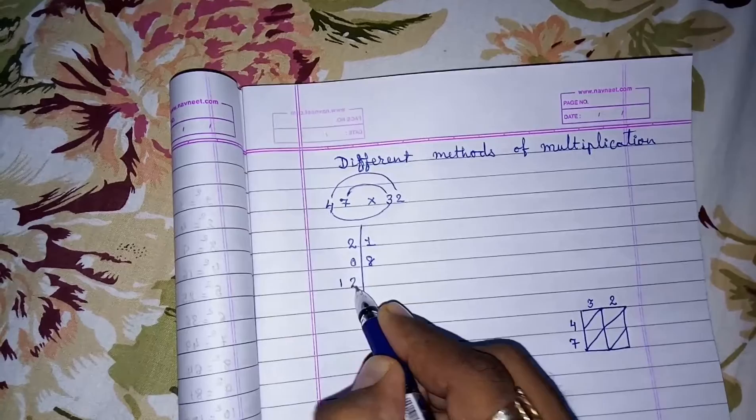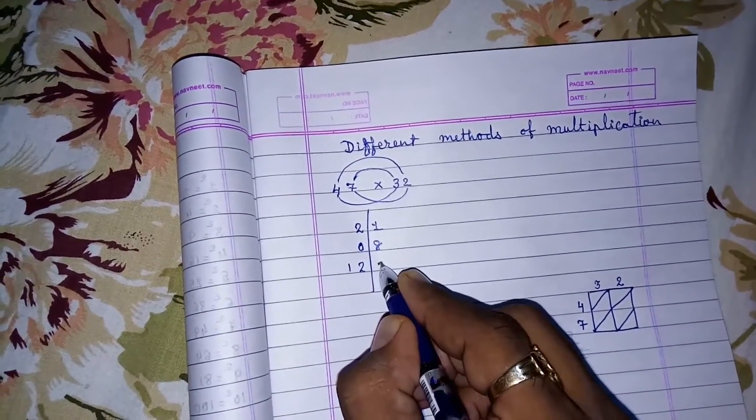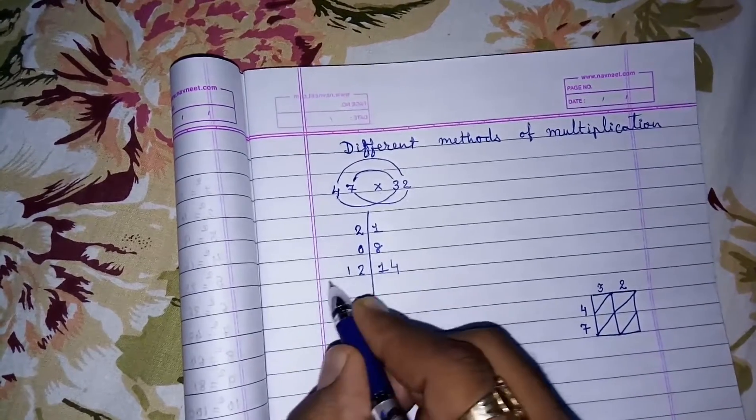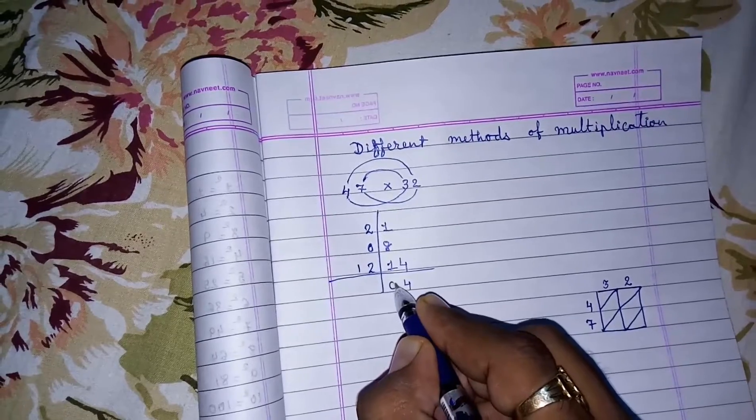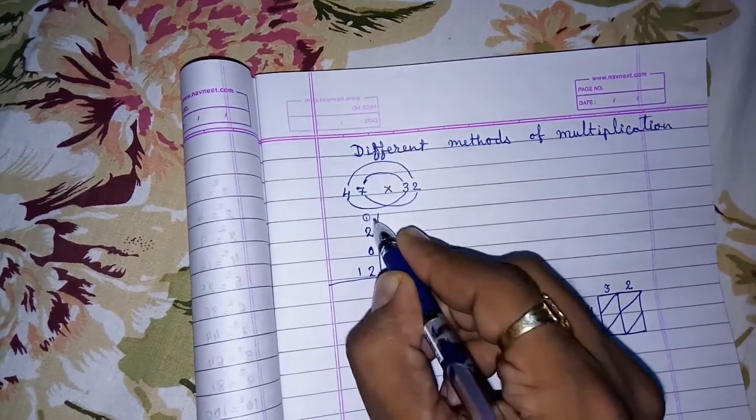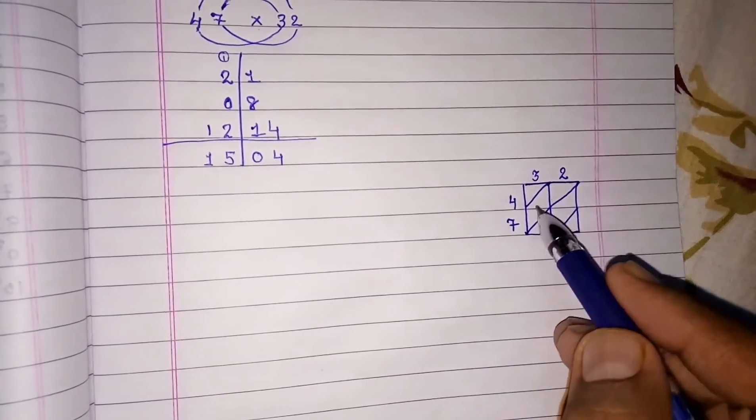And the right hand side numbers: 7 into 2, 14 on the right hand side. Then we have to add this: 4, 0 carry 1, 5, 1. Look at the next method. Here I had arranged and made a table like this.